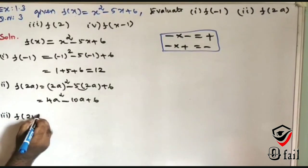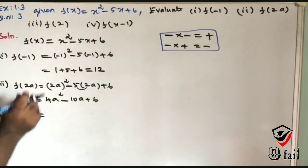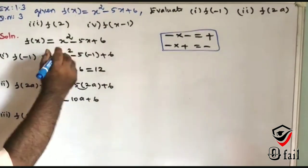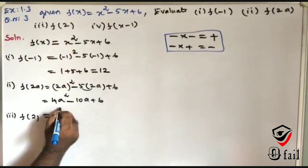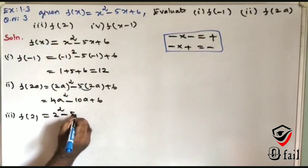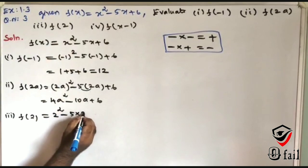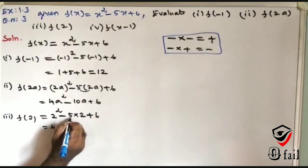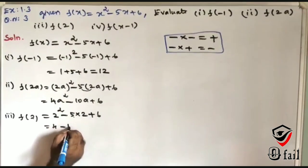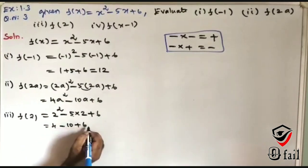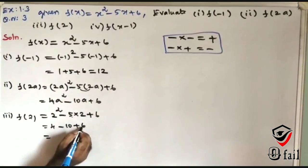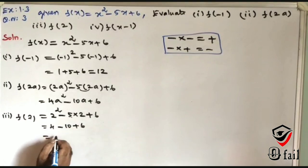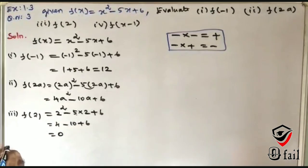Third problem: F of 2, where X is replaced by 2. Apply 2: 2 squared minus 5 into 2 plus 6 equals 4 minus 10 plus 6. So 6 plus 4 is 10, and 10 minus 10 equals 0.